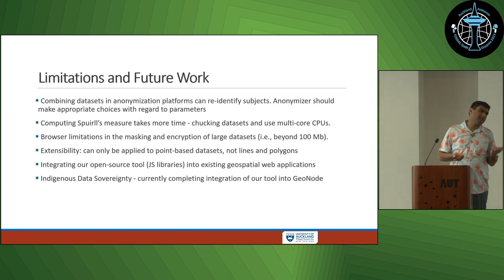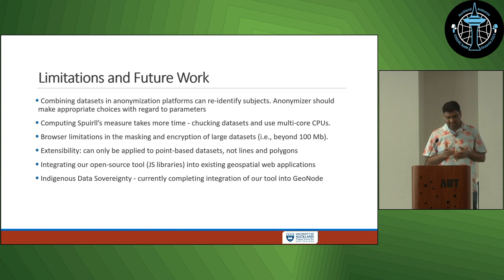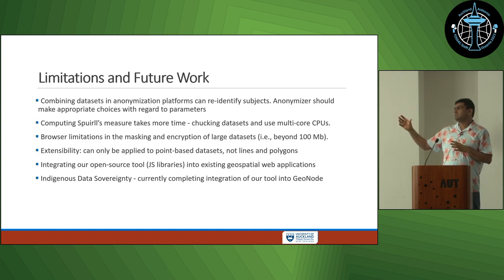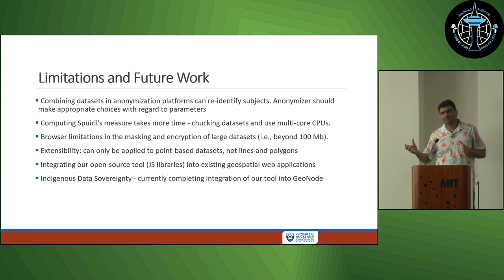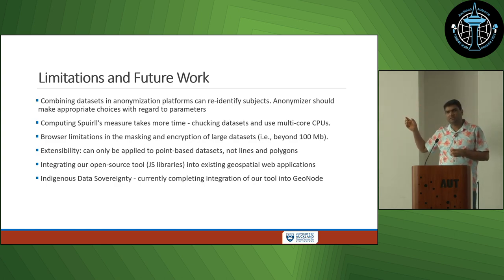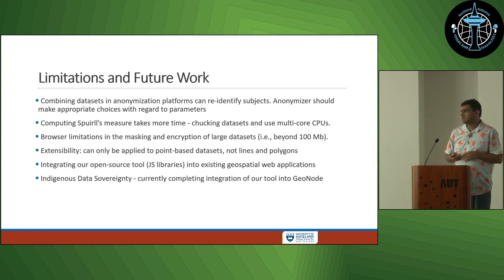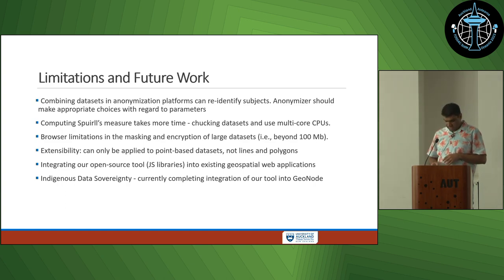We do have some limitations. The tool is browser-based, so it cannot handle large datasets — more than 100 megabytes. Geomasking in general, depending on the dataset, can sometimes be defeated by combining other data sources to locate what we are trying to hide. For example, if you're trying to hide crime locations within a street but there's only one street in that area and you've masked the point to only 100 to 200 meters away, anyone can infer the crime location is on that street. So you have to choose geomasking thresholds to a higher degree. At the moment, we only handle point-based datasets — not lines and polygons.